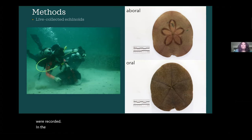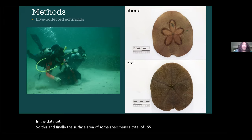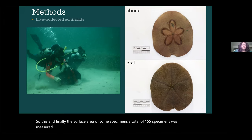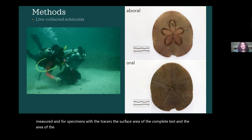Photographs of the live-collected specimens with the aboral side facing upwards were mostly used to assess test margins for traces, and the presence or absence of marginal traces on each specimen was recorded. In addition, the number of traces, location of traces on the test divided into five sectors, length and depth of traces, whether the traces involve the lunules or the petals, and the surface area of 155 specimens were also recorded and measured using Photoshop.